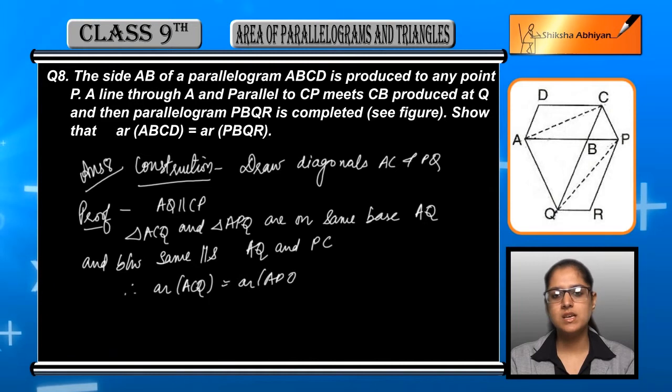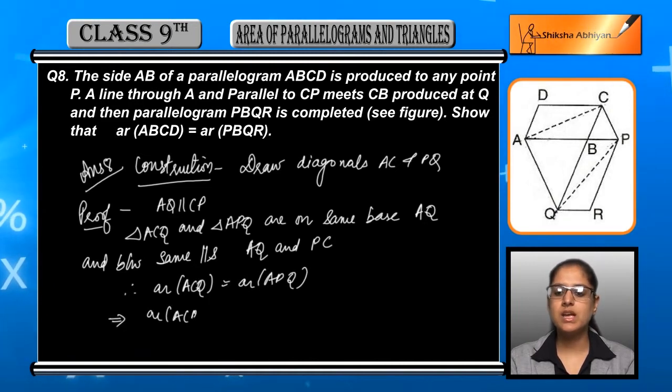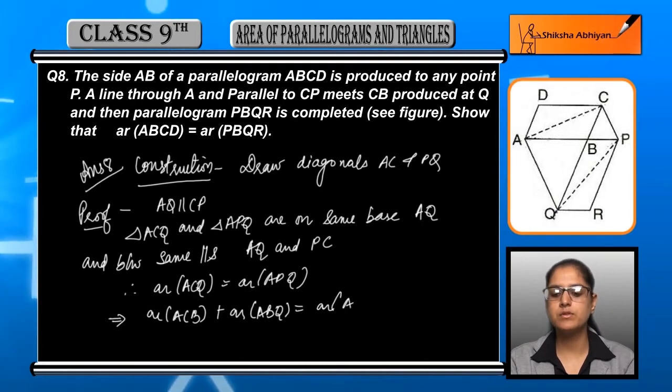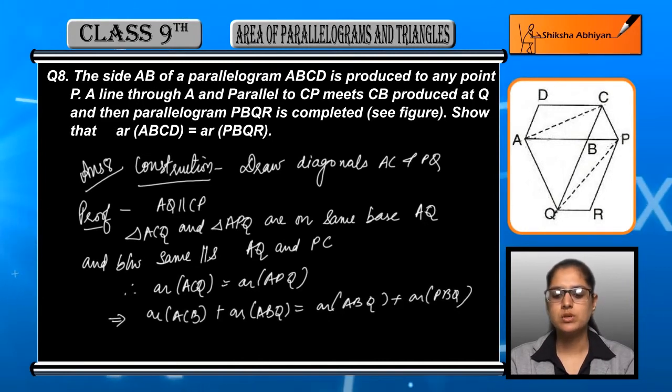Now these two areas are equal. This is why we can say that ar(ACB) + ar(ABQ) equals ar(ABQ) + ar(PBQ), breaking ACQ into ACB and ABQ, and breaking APQ accordingly.